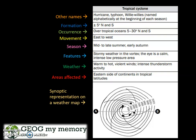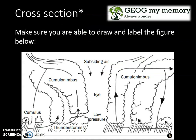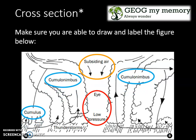The image in front of you is a synoptic representation on a weather map. This next image looks at the cross section — you must be able to draw and label this figure. Here you can see the eye, which has low pressure with subsiding air above it. Clouds associated are the cumulonimbus and cumulus clouds, and the weather associated includes thunderstorms.